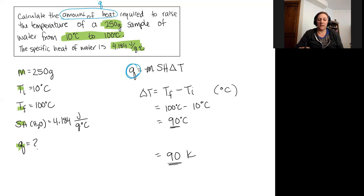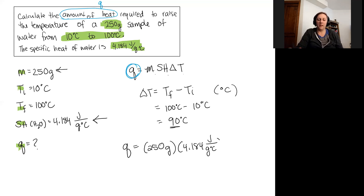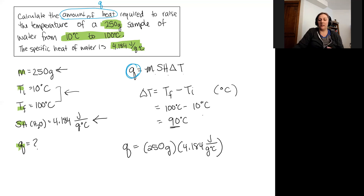Now let's plug into the heat expression. I want to solve for q, which equals mass times specific heat times change in temperature. I'll use my mass of 250 grams, my specific heat of 4.184 joules per gram degrees Celsius, and my change in temperature of 90 degrees Celsius calculated from the initial and final temperatures.